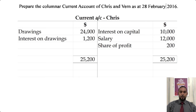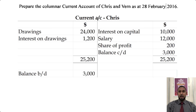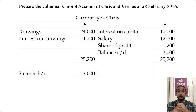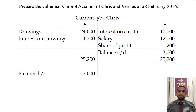Something interesting happens: we end up with more value on the debit side than on the credit side, which means this current account is going to be a deficit. The balance is brought down on the debit side. A debit balance means the partner is in deficit — the partner withdrew more than the partner earned. If it were a credit balance, the partner would be in surplus.